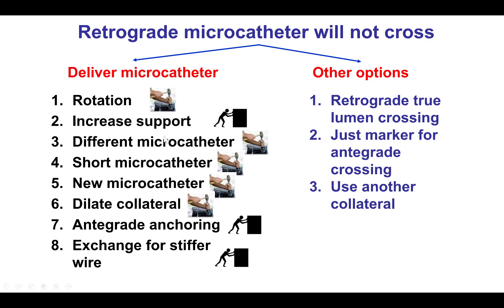We also tried to deliver the microcatheter by rotating it. We used a guide extension to increase support. We tried several microcatheters — Turnpike LP, Corsair XS, Caravelle, and FineCross — but unfortunately none of them would cross. We tried a 35-centimeter-long microcatheter and also tried to dilate with a 1.0 mm Subfire probe balloon, but this did not cross either. We were not able to get the wire far enough to do antegrade anchoring or to exchange it for a stiffer wire.